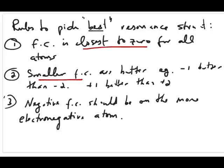If you can draw a resonance structure where you get one of the atoms to be negative one, as opposed to negative two, then negative one will be better. And positive one versus positive two — positive one will be better. The last rule is that if you end up with negative formal charges, you want to make sure that the negative formal charge resides on the more electronegative atom.